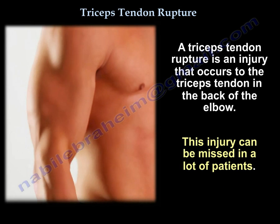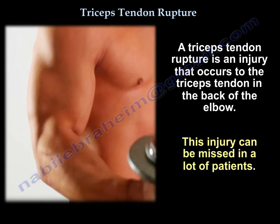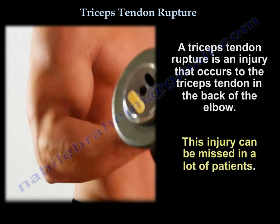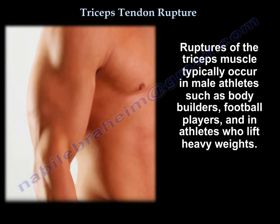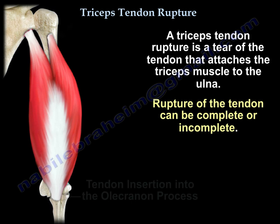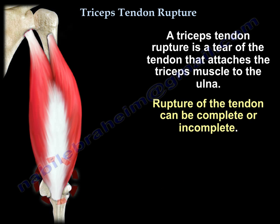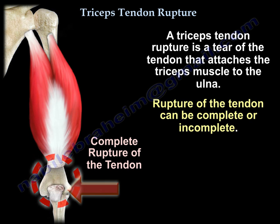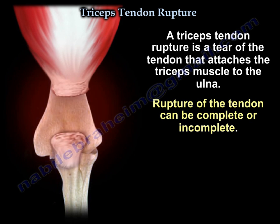A triceps tendon rupture is an injury that occurs to the triceps tendon in the back of the elbow. This injury can be missed in a lot of patients. Ruptures typically occur in male athletes such as bodybuilders, football players, and athletes who lift heavy weights. A triceps tendon rupture is a tear of the tendon that attaches the triceps muscle to the ulna. Rupture can be complete or incomplete — here you can see an example of a complete rupture of the tendon.